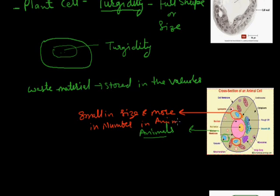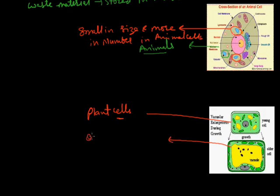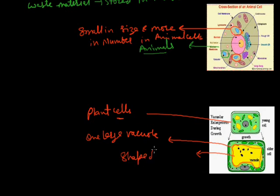This is the plant cell and animal cell — this is a unique property of both. This plant cell also has vacuoles, but they are few in number. Here, one large vacuole is present centrally in the cell, occupying the maximum volume or area of the cell, and it is also responsible for the shape and size of the cell.